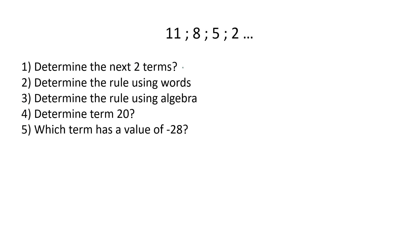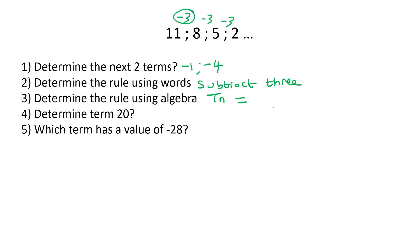Let's do another one. Looking at 11 and 8, we can see we are minusing three. So what is 2 minus 3? That gives negative one. And negative one take away three gives negative four. The rule in words: subtract three. For the algebraic rule: you put minus three and then N. The number before the sequence would have to be 14, because 14 minus three equals 11. So TN = -3N + 14.